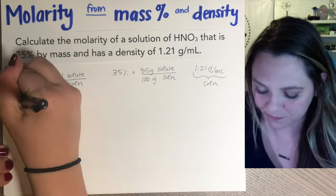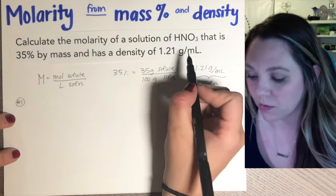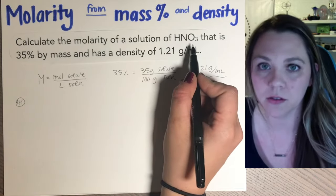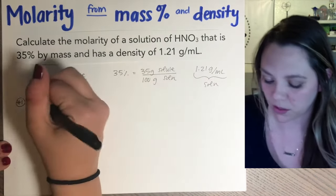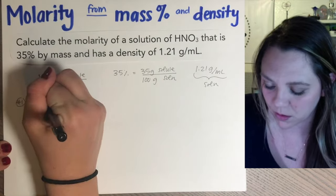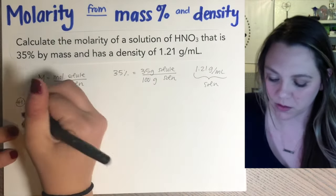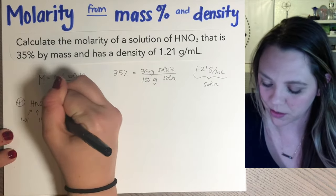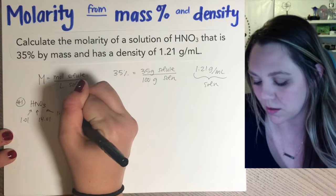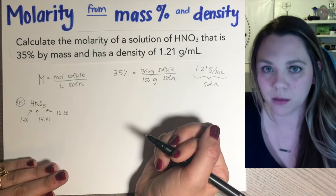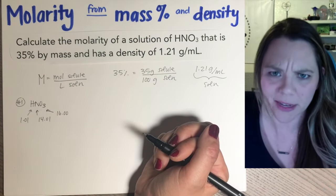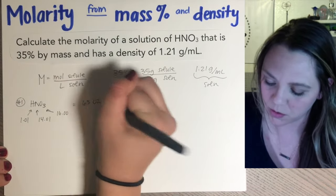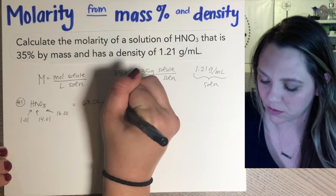So here's kind of way number one. First things first, you're going to need to calculate the molar mass of whatever solute is in your solution. So in this case we have HNO3. You need to calculate the molar mass. So each hydrogen is 1.01. Each nitrogen is 14.01. Each oxygen is 16.00. Add it all up to get the molar mass. The molar mass of this guy is 63.02 grams per mole.